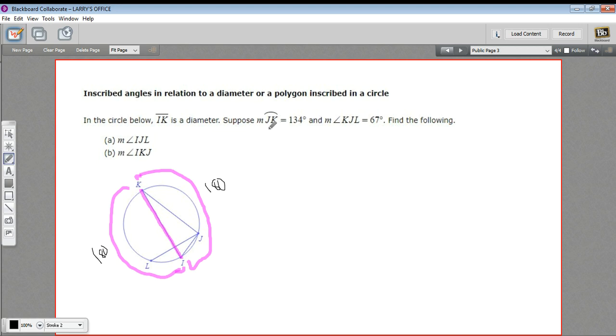Next, it says, suppose that the arc JK is 134. So from J to K is 134.